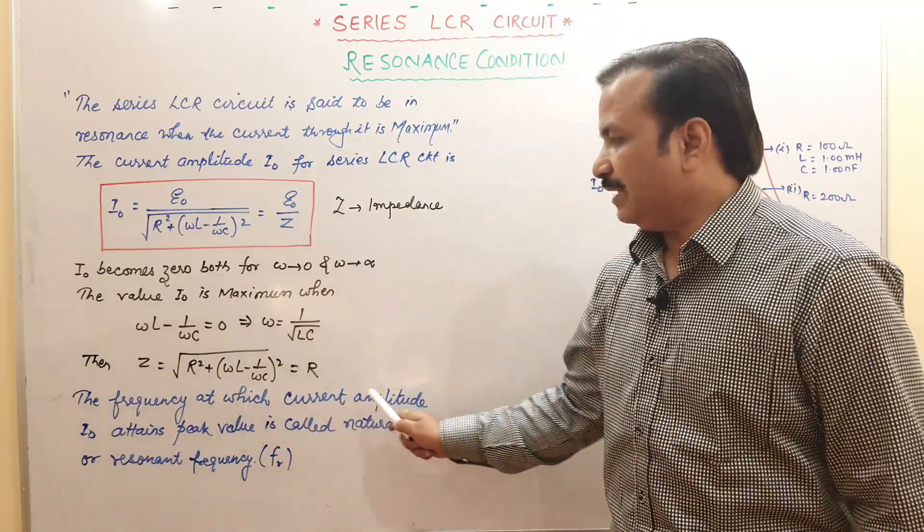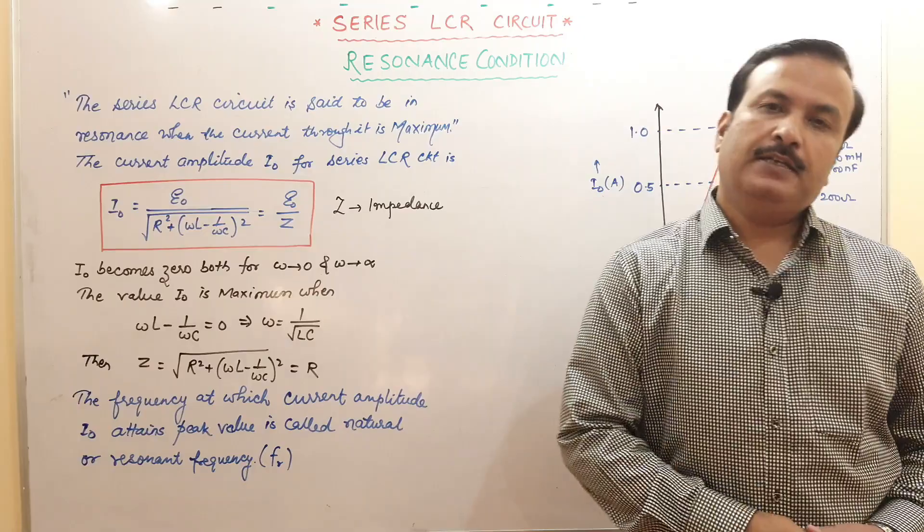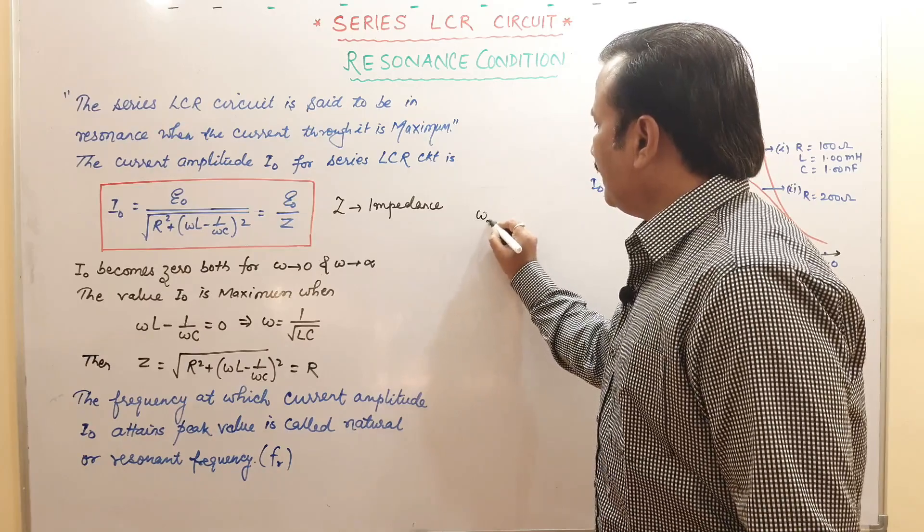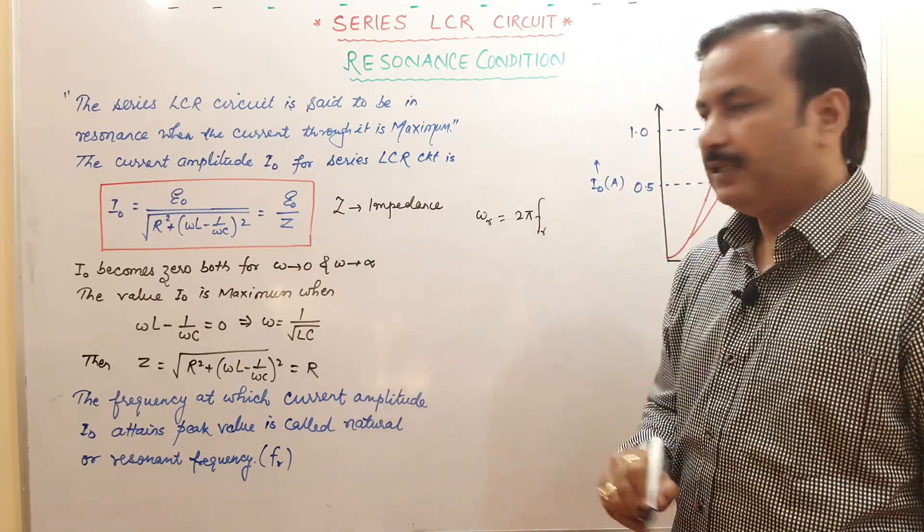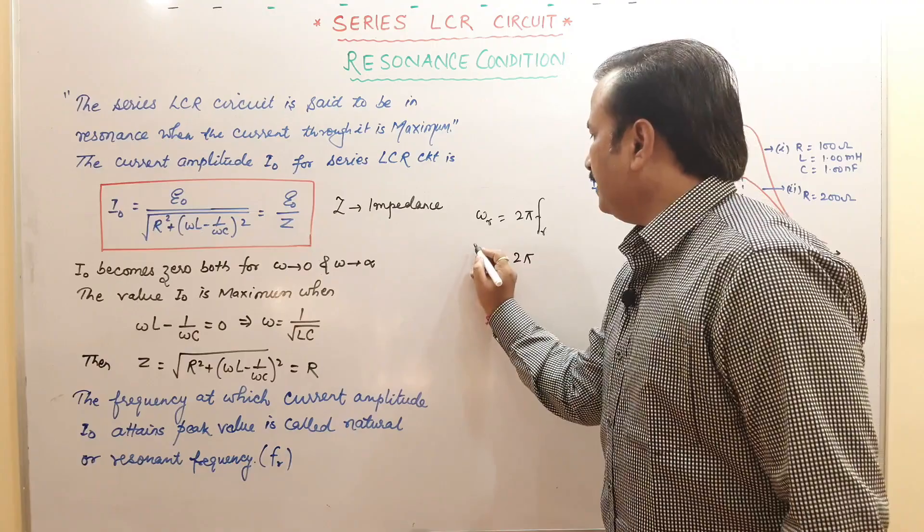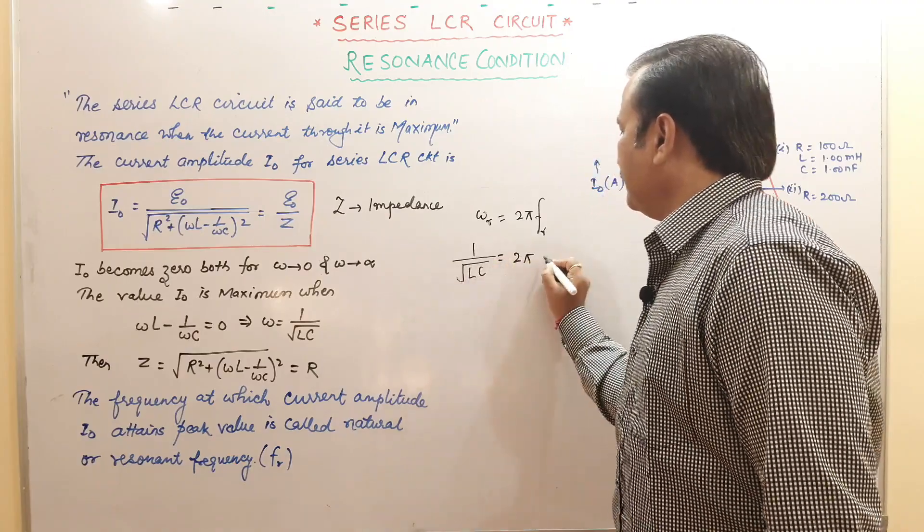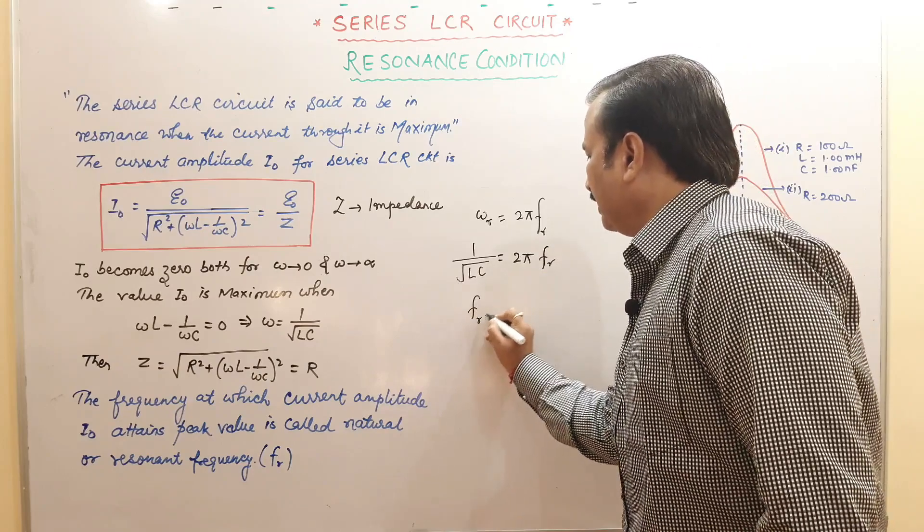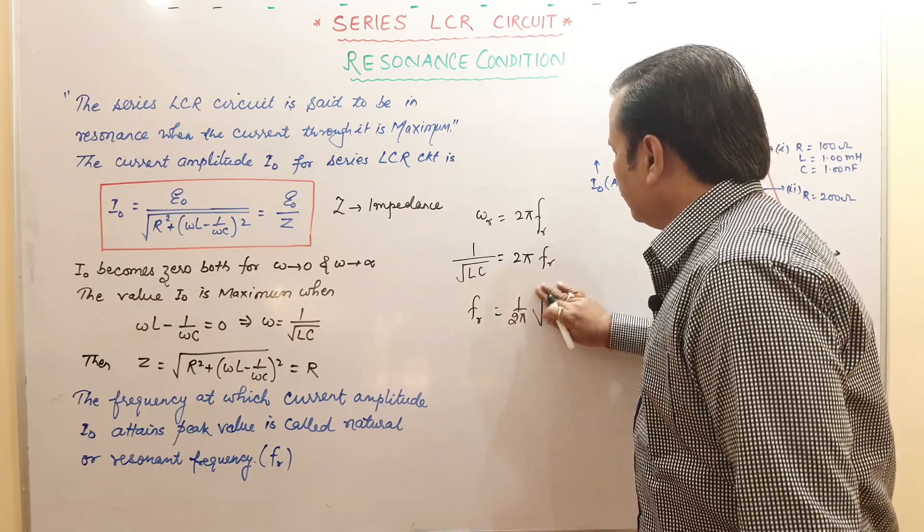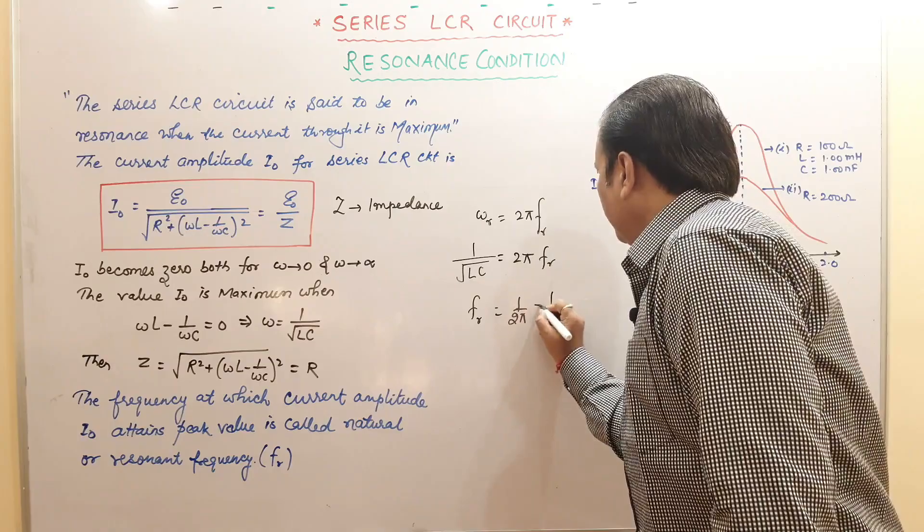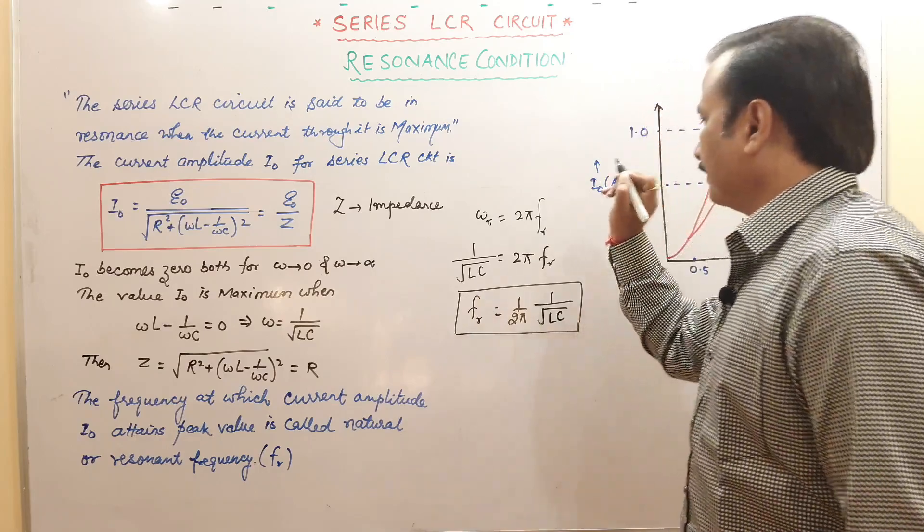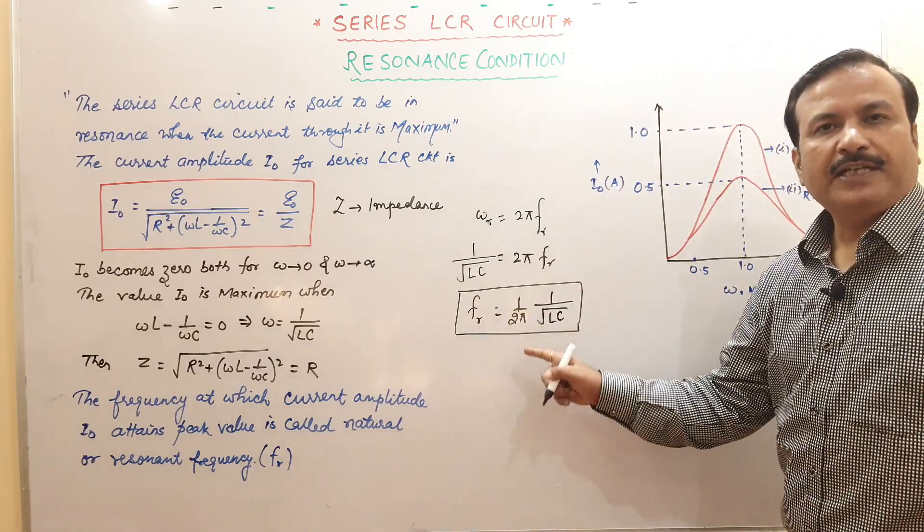The frequency at which current amplitude i naught attains the peak value is called resonant frequency. We represent it by fr. Angular frequency is omega r is equal to 2 pi f. So we will be writing fr. This value is 2 pi times omega value 1 upon under root lc times fr. So you will have fr equal to 1 upon 2 pi under root lc. This is called resonant frequency of the circuit.